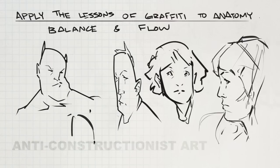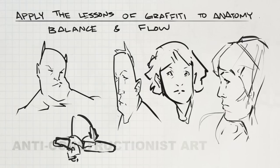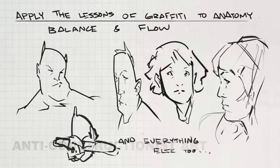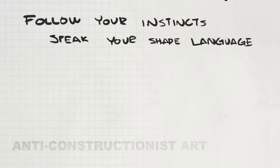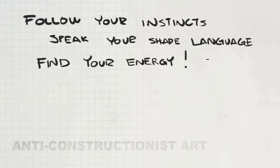I always use faces as my examples because I feel like we relate to them the most, but these lessons of graffiti definitely apply to everything else in the design world — from industrial to creature design to anything in between. The most obvious question might be: what exactly makes a shape appealing or unappealing? I keep mentioning things like balance and flow, but unfortunately there's no real comprehensive answer — it's a little too vast to sum up. I recommend that you follow your instincts and learn to speak your own shape language, because no one is going to have the same appealing shapes that you form in your own head. Just be confident. Find your energy. The more energetic you are in the way you approach your shapes, the better they will be.